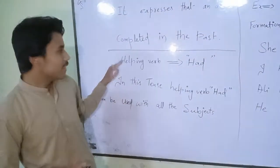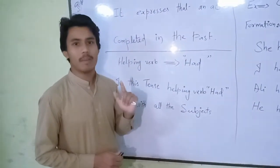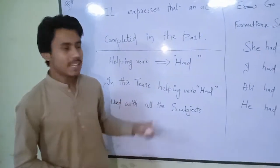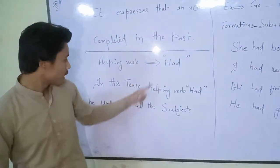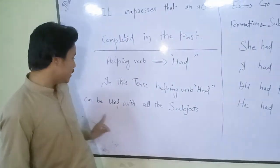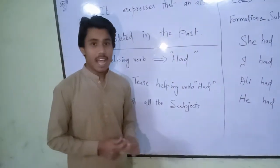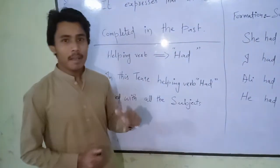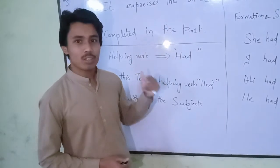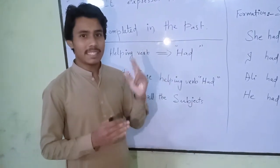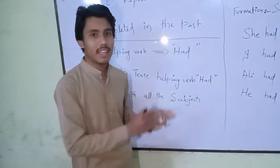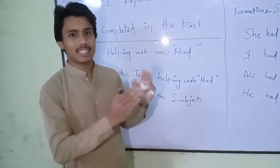There is only a single helping word for the Past Perfect Tense, and that is 'had'. This helping word 'had' can be used with all subjects. Previously in Urdu, we were using different suggestions with different subjects, but in this tense it is only a single helping word.